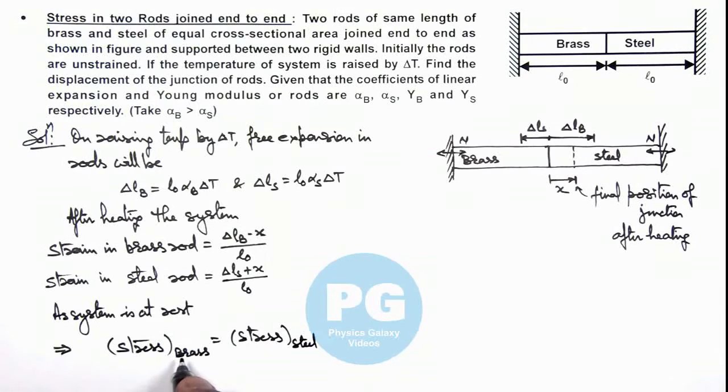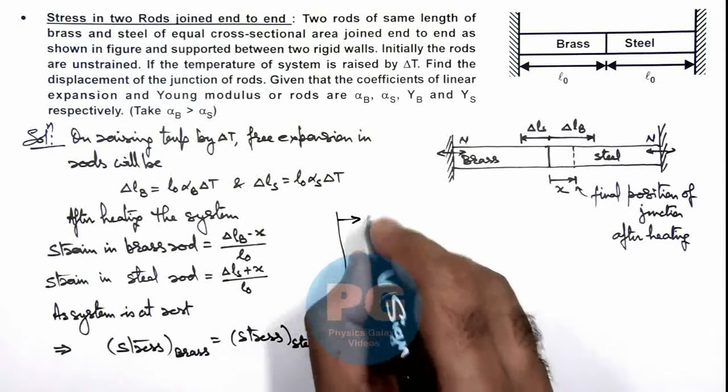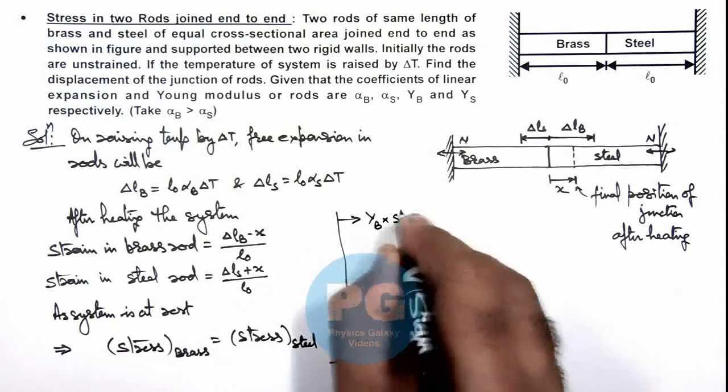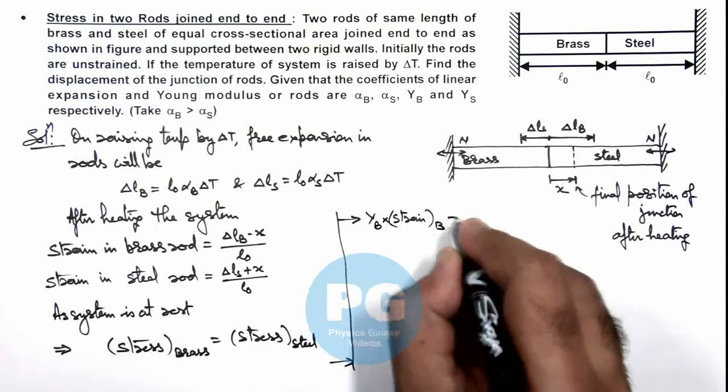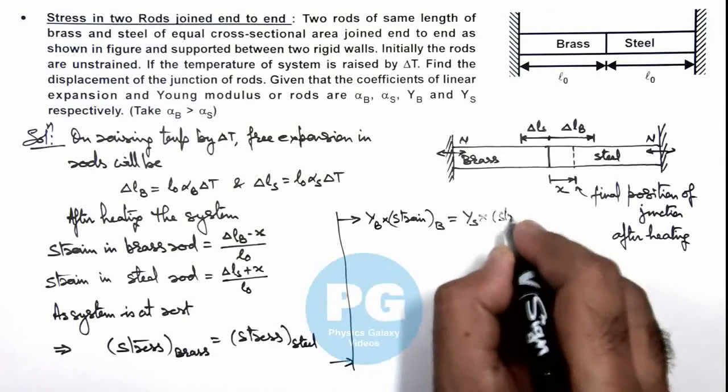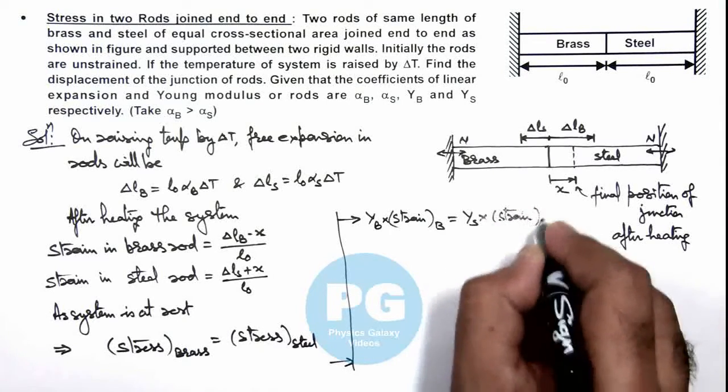Now this stress we can write as Young's modulus of brass multiplied by strain in brass should be equal to Young's modulus of steel multiplied by strain in steel.